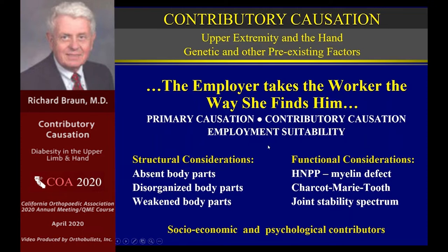Let's talk about some of the genetic confounders that enter into the picture when dealing with upper extremity patients. We have to deal with structural considerations and functional considerations. Structural considerations are important, but we don't see them very frequently — but when they happen, they do happen.